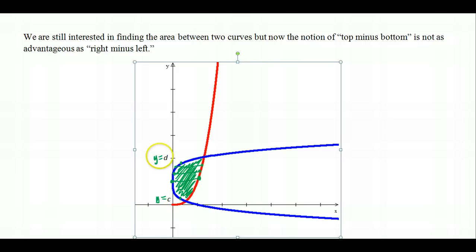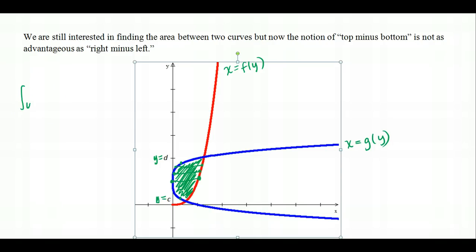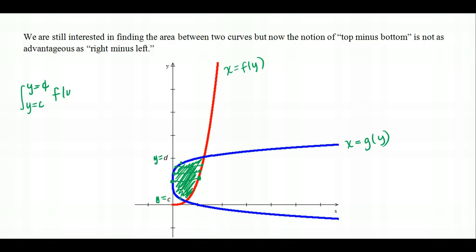The difference is that the limits of integration are y = C to y = D, and the equations also have to be in terms of y — meaning x = f(y) and x = g(y). The integral is set up from y = C to y = D of the right function f(y) minus the left function g(y) dy. This setup is used when there's no clear top-minus-bottom, or when top-minus-bottom falls on the same curve.